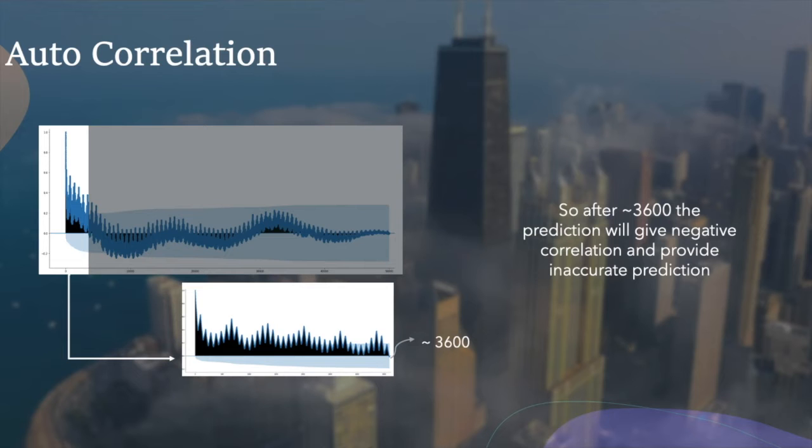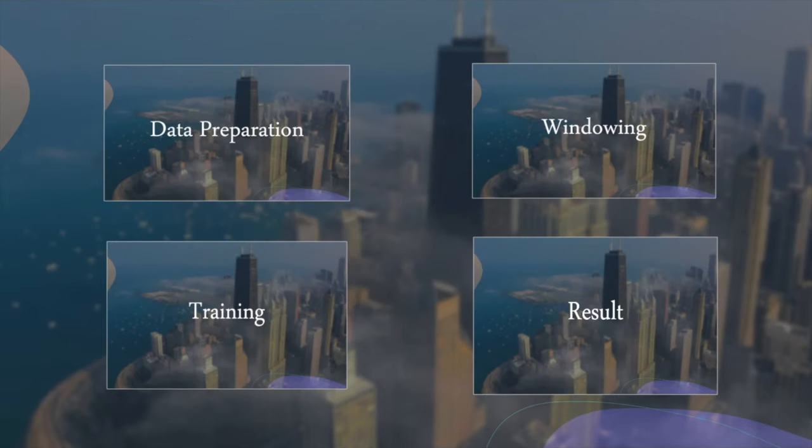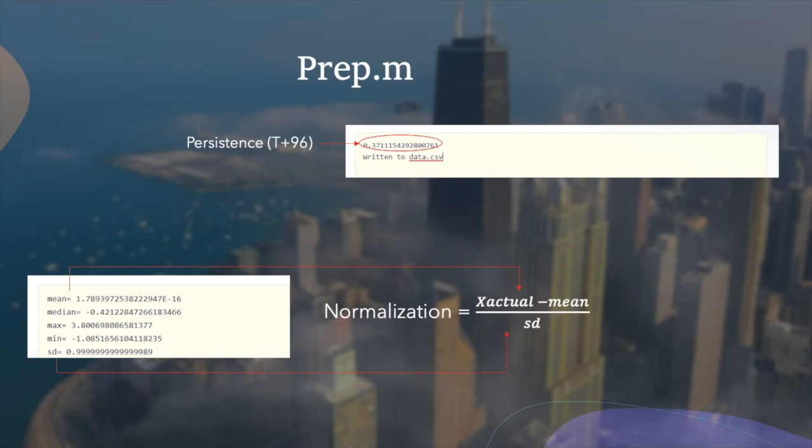Now we have analyzed all the data. Let us move on to the neural network training for one day. We start with normalizing the data to speed up our neural network to reach minimum loss, then getting persistence as our benchmark to beat, which equals 37%.